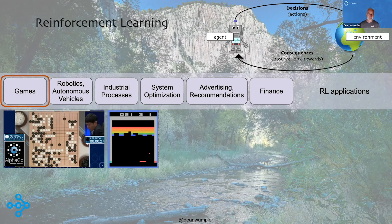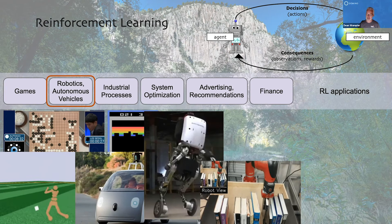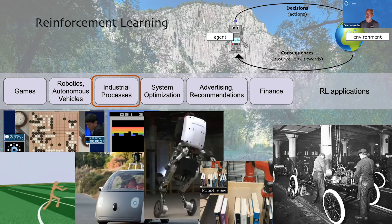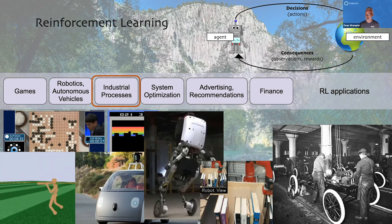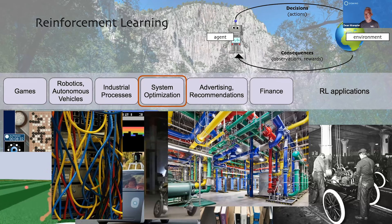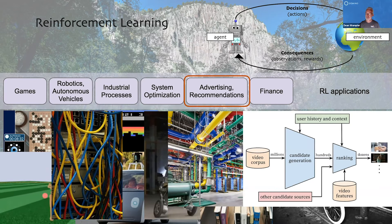Reinforcement learning really got popular a few years ago, primarily because it was used to beat the world's best Go players and achieve expert gameplay in Atari games. It proved the benefit of this powerful technique for sequential problems — playing a game or walking through an obstacle course. Some other applications include robotics and autonomous vehicles, training robot hands to place objects, and optimizing and simulating industrial processes like assembly lines — which is one of the interesting cases where it's breaking out into enterprise use.